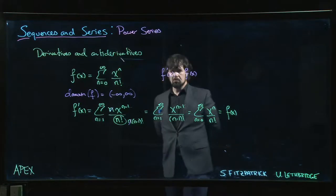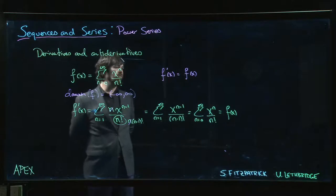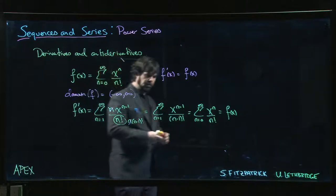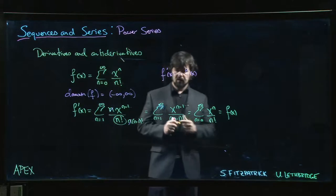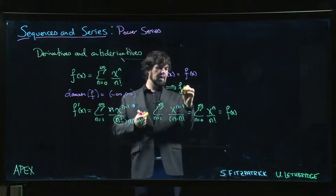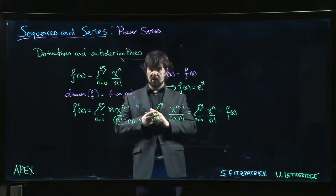Now we start thinking: do we know examples of functions that are equal to their own derivative? Well, the zero function is one. This doesn't really look like the zero function—looks like this takes on some nonzero values. What's another one? Exponential function! This suggests that maybe this f(x) is really e^x.